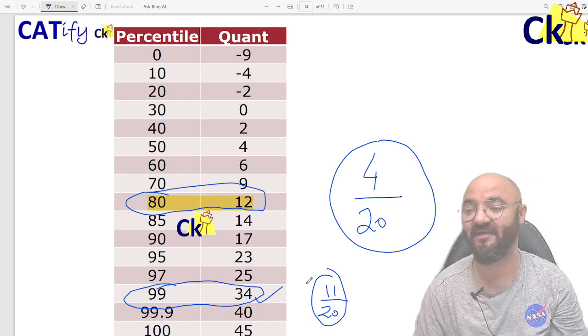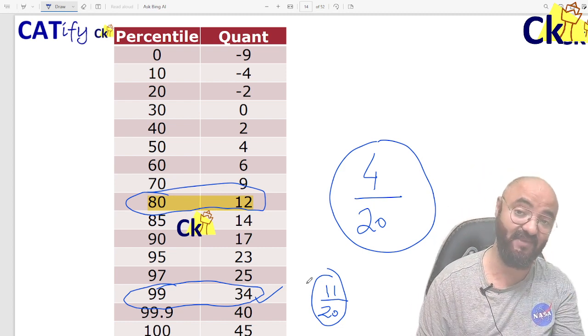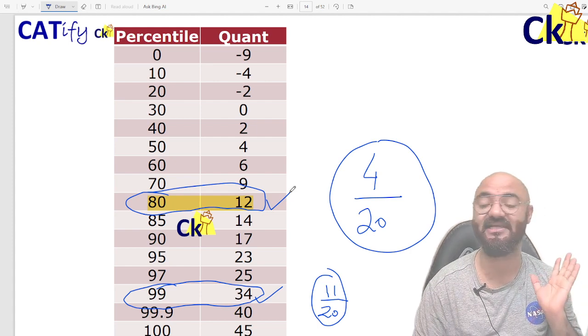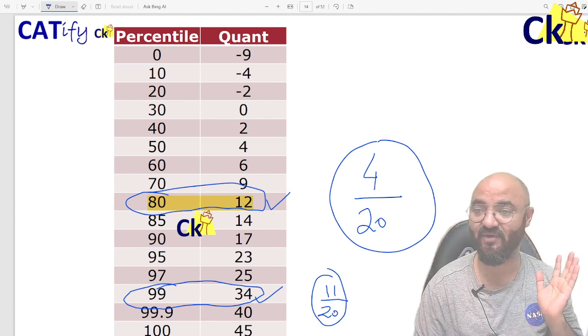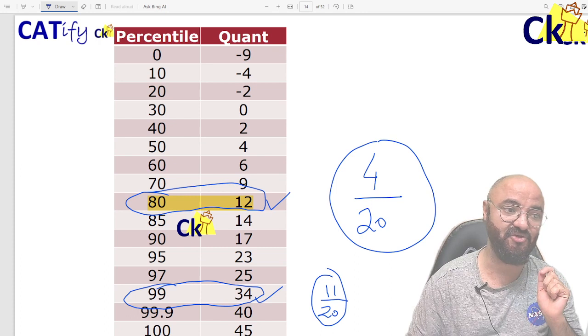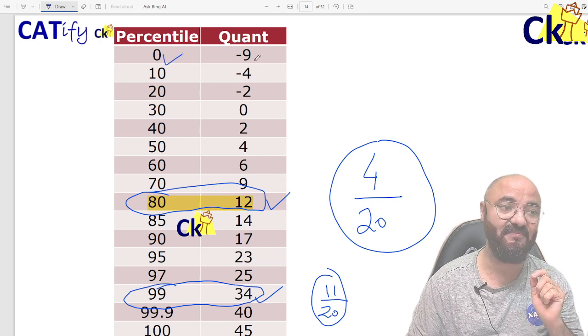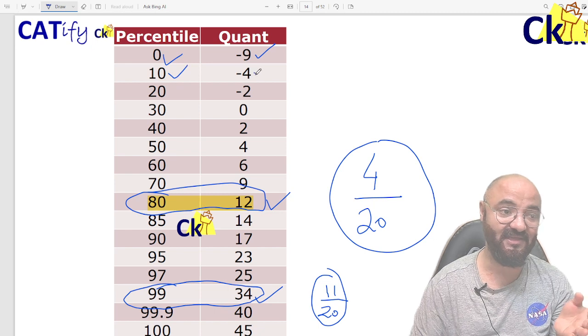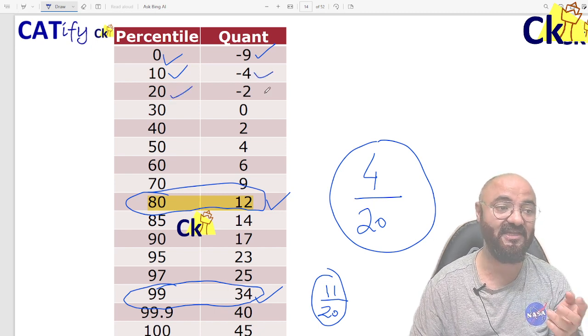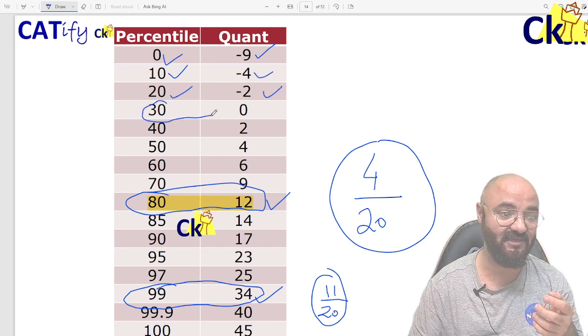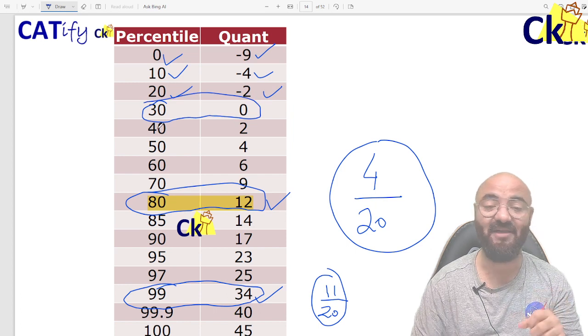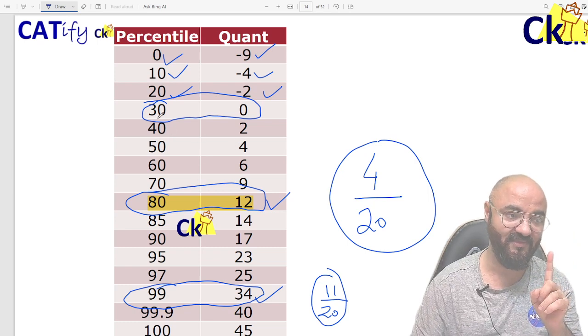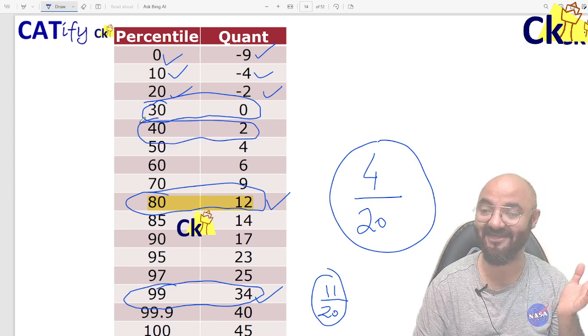But bare minimum, you have to cross eighty percentile because most of the IIMs, even the main IIMs, have the basic cutoff required as eighty percentile. These two are your targets, but this is a shocking number. Zero percentile means minus nine marks, ten percentile is minus four, twenty percentile is minus two, and thirty percentile is zero. Imagine I solve only one question.